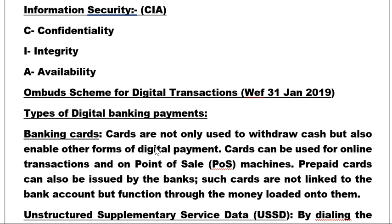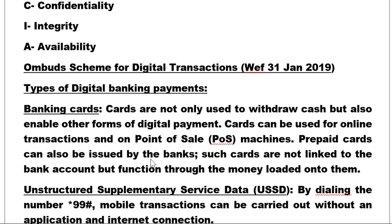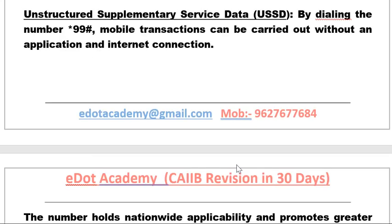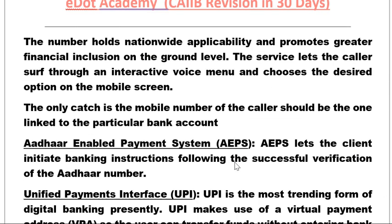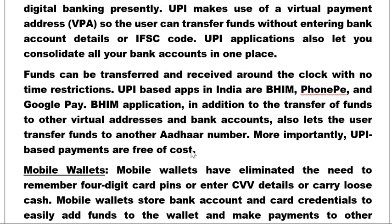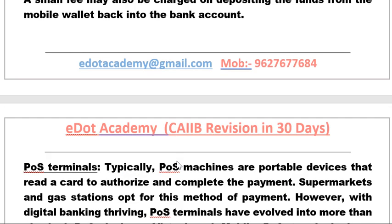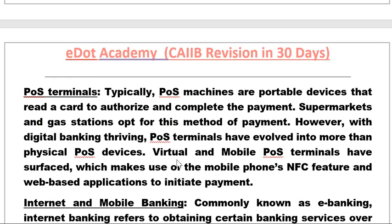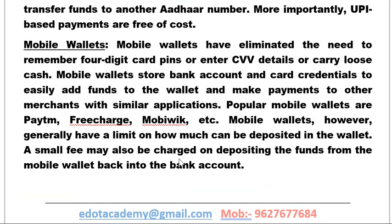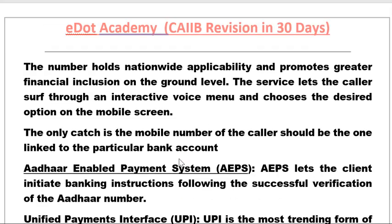The types of digital banking payments include: banking cards, Unstructured Supplementary Service Data (USSD), Aadhaar Enabled Payment System (AEPS), UPI, mobile wallets, POS terminals, and internet and mobile banking. We will discuss all of these one by one.